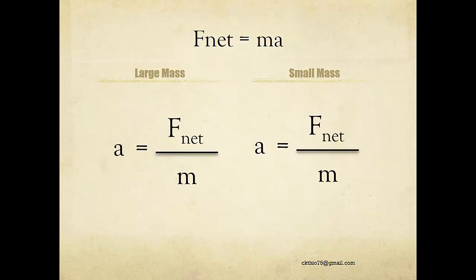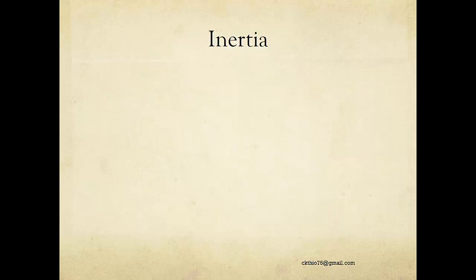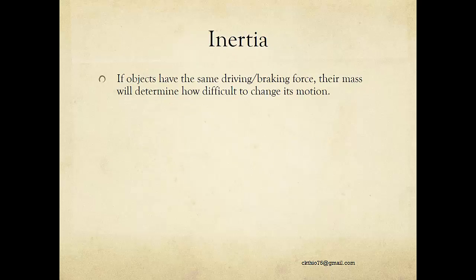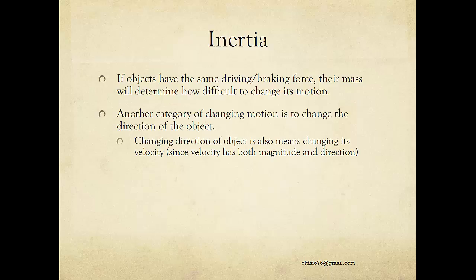Using Newton's second law: if you have a big mass, acceleration will be small, making it very difficult to change its velocity. With a small mass, acceleration will be large, so you can easily change the velocity of a small object. Given the same driving or braking force, mass determines how difficult it is to change an object's motion — big mass means small acceleration, and small mass means high acceleration.